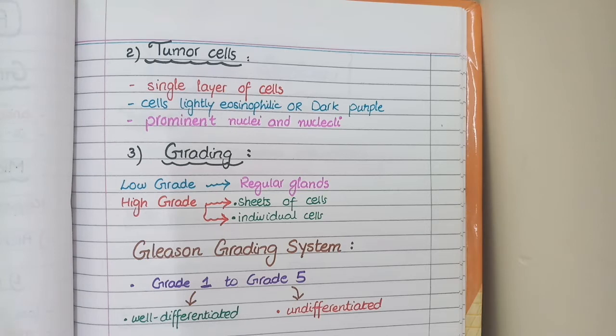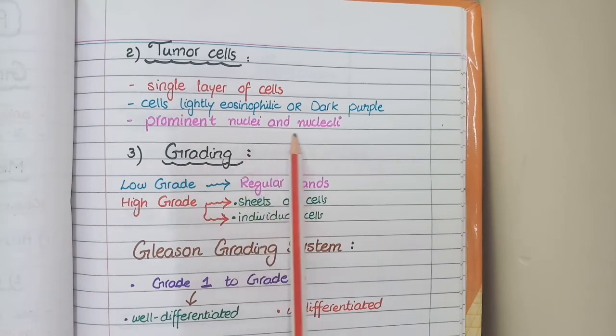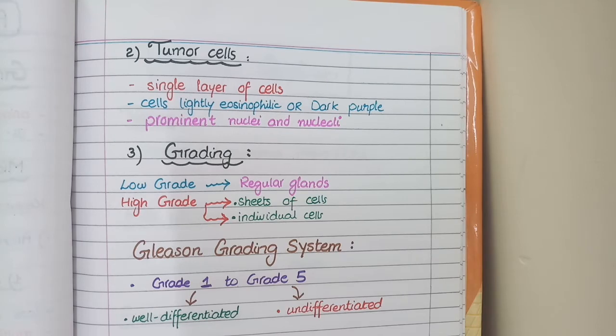Thirdly, in prostate carcinoma, the tumor cells have prominent nuclei and nucleoli. You know that in carcinoma, the cells are dividing very rapidly. So as a result, you see prominent nuclei and nucleoli.